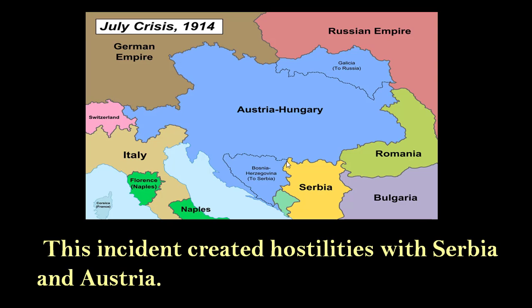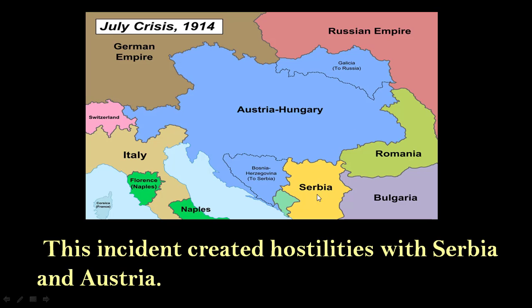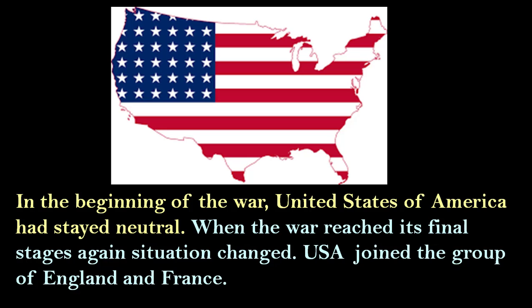This incident created hostilities between Serbia and Austria. Archduke Francis Ferdinand, the Prince of Austria, was murdered by Serbia. This became the immediate cause for the First World War. In the beginning of the war, the United States of America had stayed neutral.